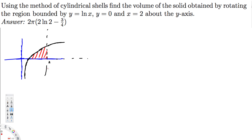To find the volume using the cylindrical shell method, we use the formula V = 2π ∫ r·h dx (or dy). Since we're rotating around the y-axis, it's opposite — we use dx. If it were rotating around the x-axis, we'd use dy. So since this is dx, we need radius and height in terms of x.